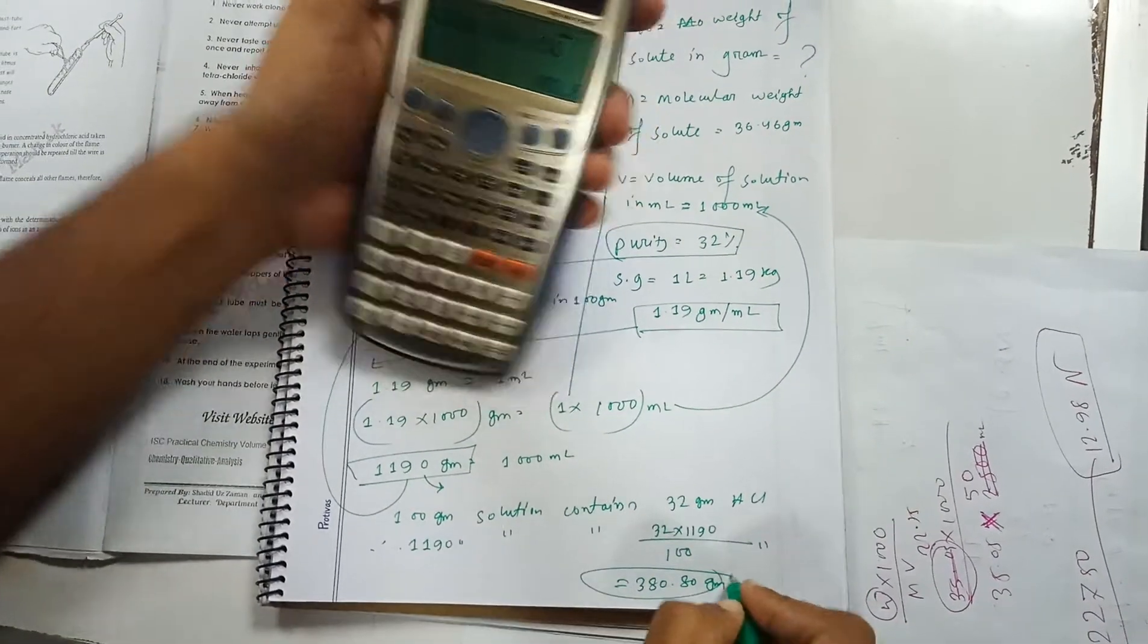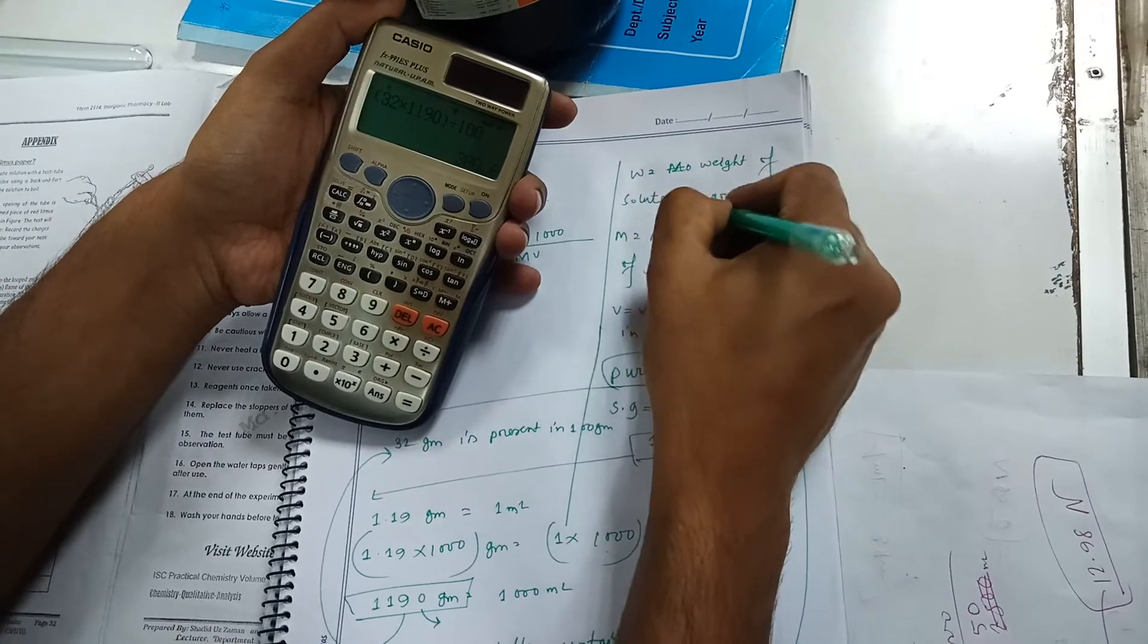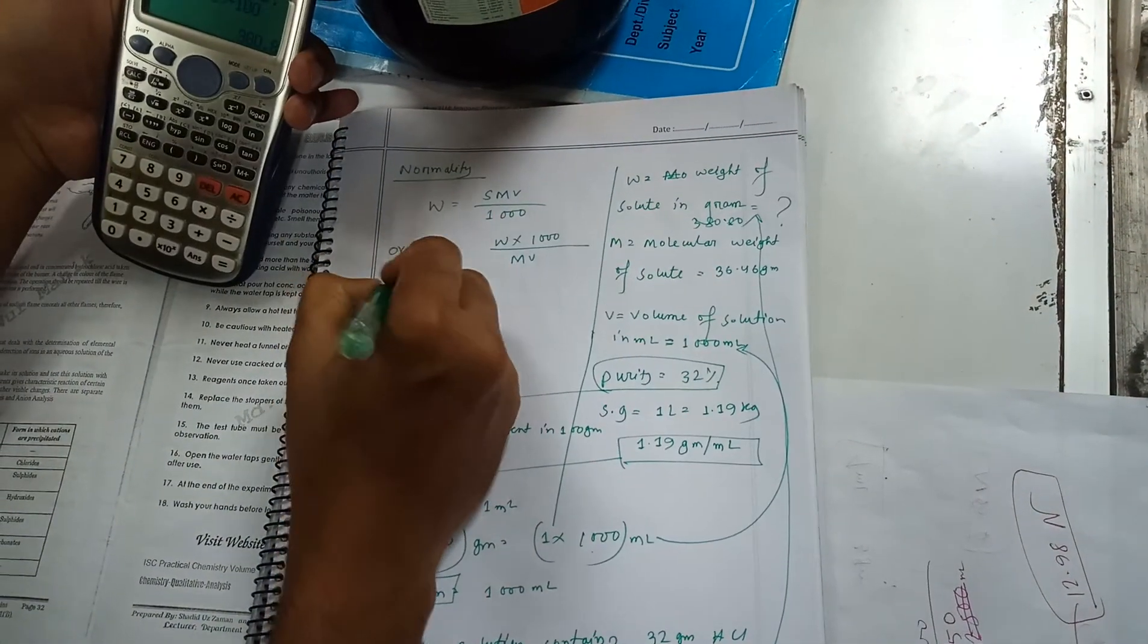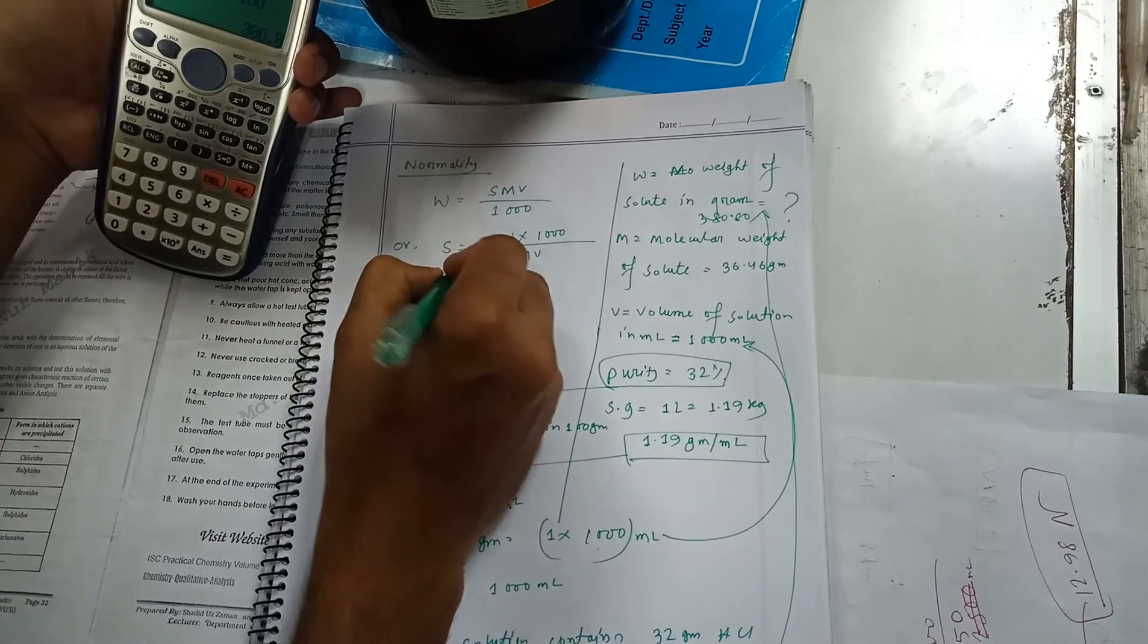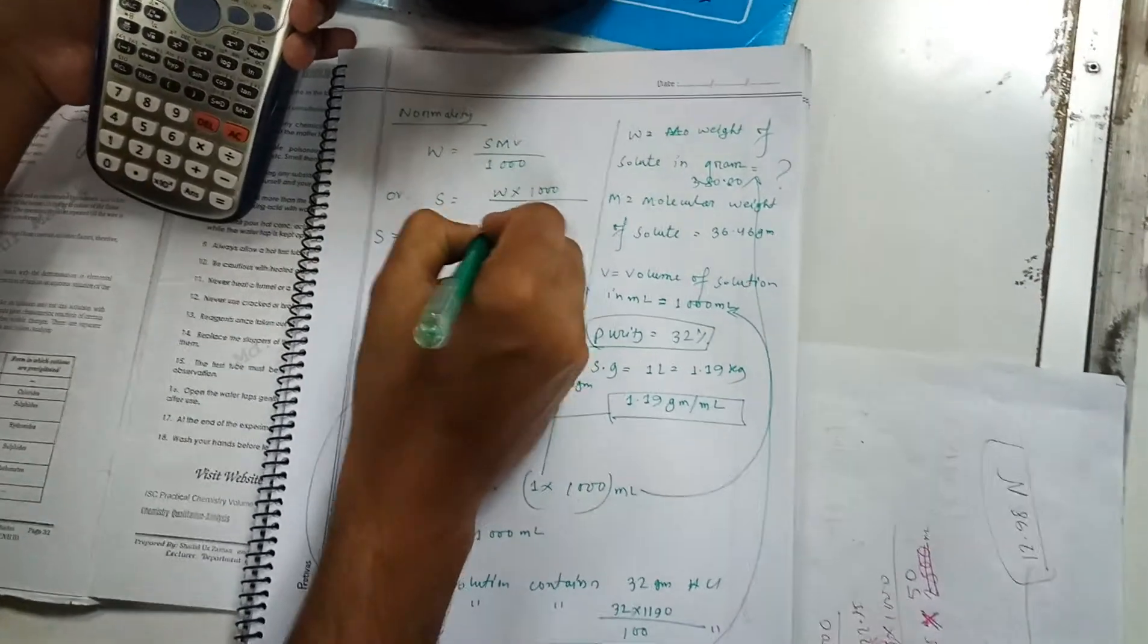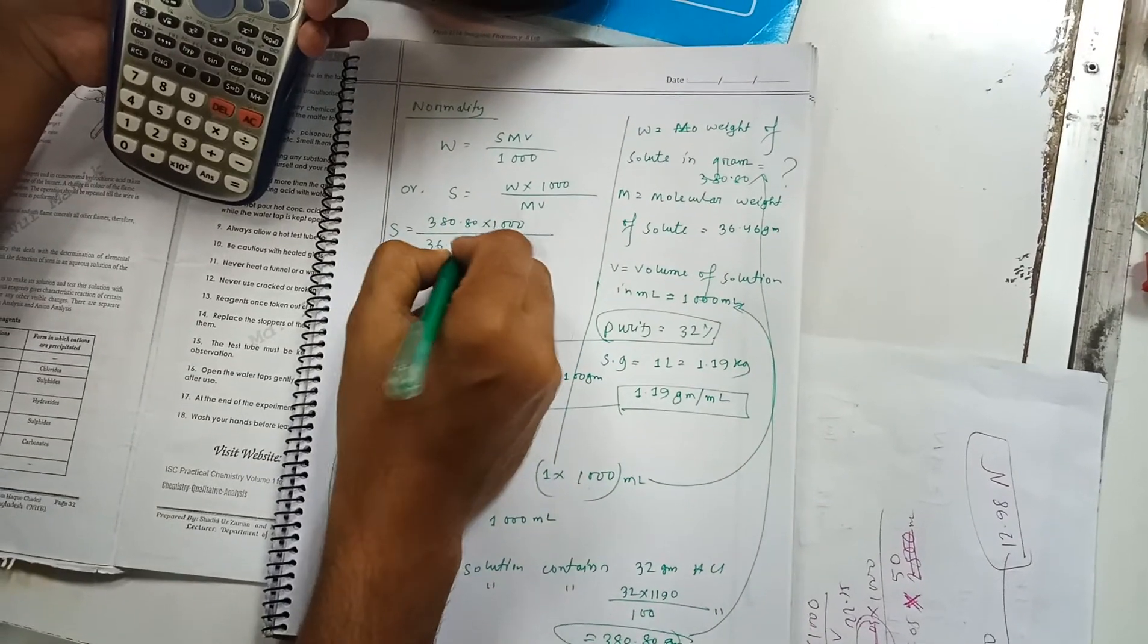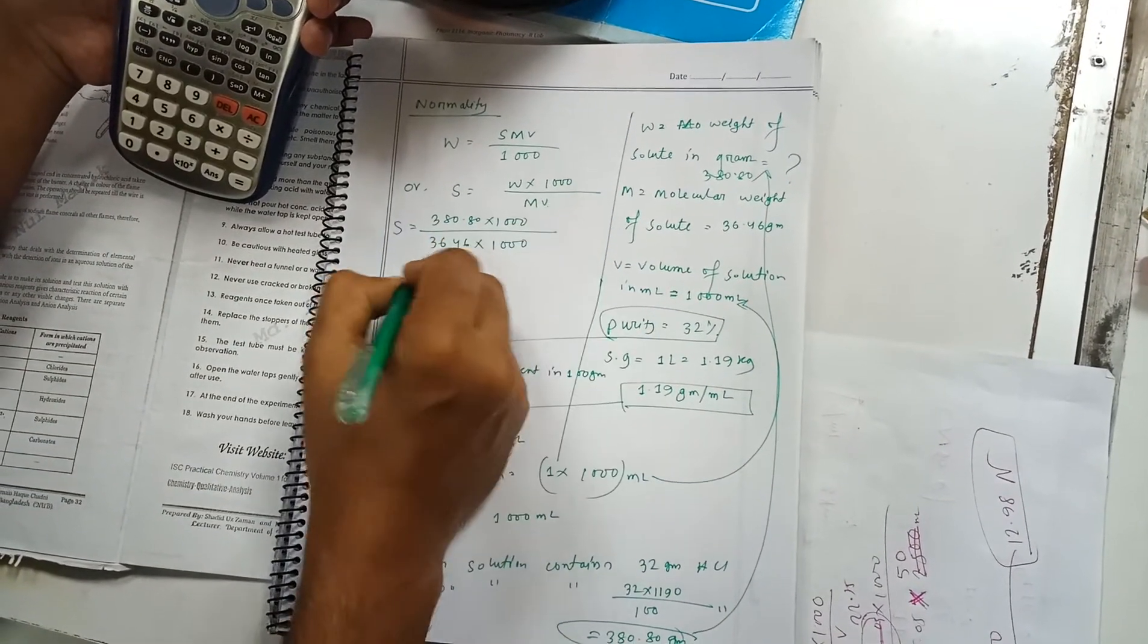This is the value for W, 380.80 grams. Now, putting this value in the equation, we will get S equals 380.80 times 1000, then M is 36.46 into 1000, and volume V is 1000.